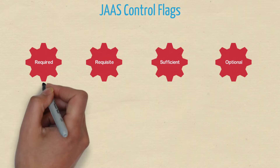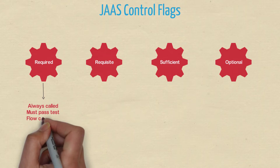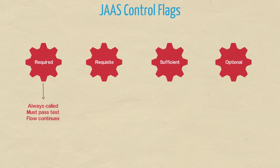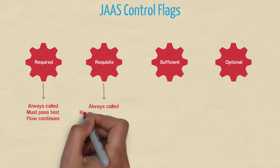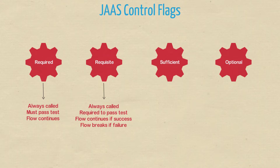The required flag is always called and must pass the authentication test; authentication flow continues down the list irrespective of success or failure. The requisite flag is similar to required — it is always called and required to pass, but if it fails, authentication flow will not continue down the list; it flows down only if authentication is successful.